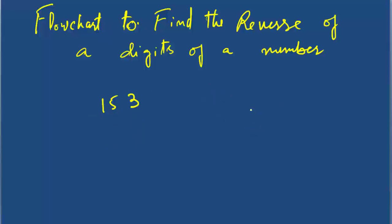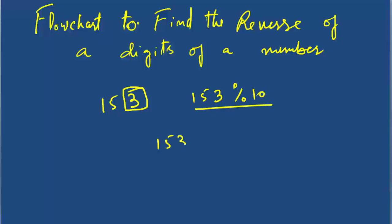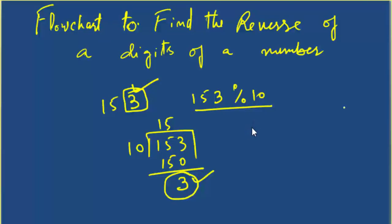What is the logic behind this? How can I achieve this? Suppose I have the number 153. First we will separate the 3 from 153. How? I will find the remainder of 153 divided by 10. 10 into 15 is 150, so the remainder will be 3. Now, about the percentage symbol — there are two symbols: percentage and divide. Percentage means we have to find the remainder.